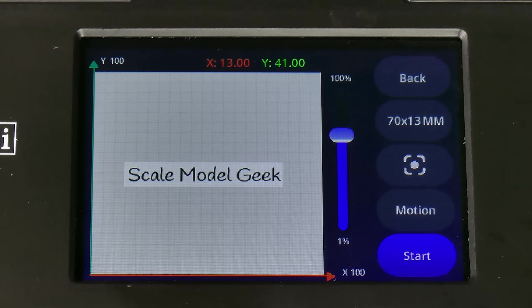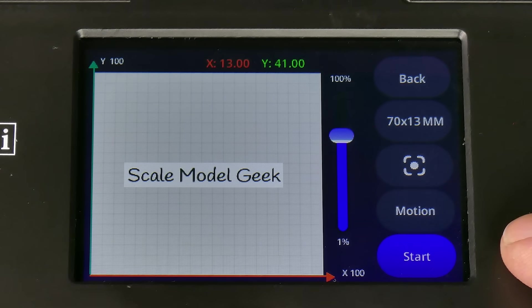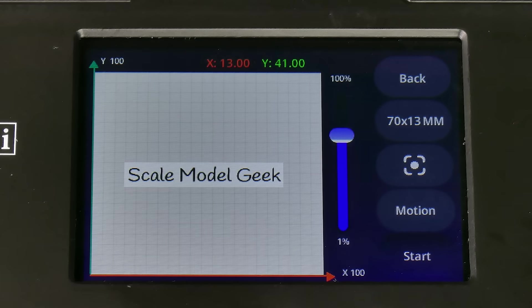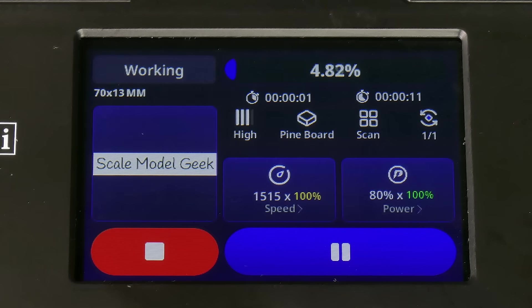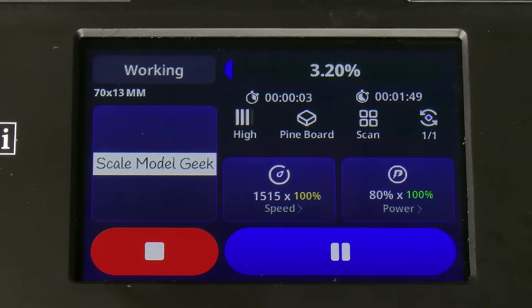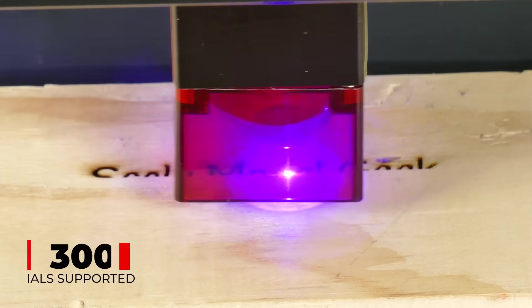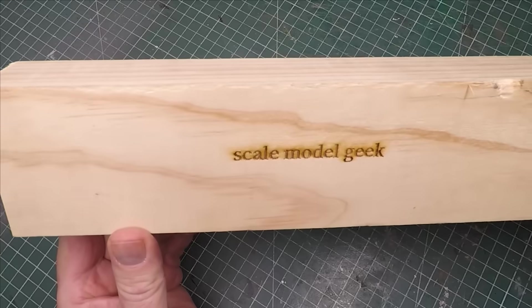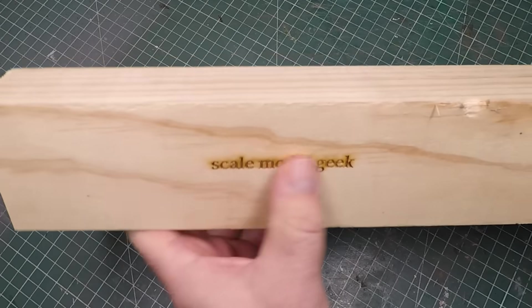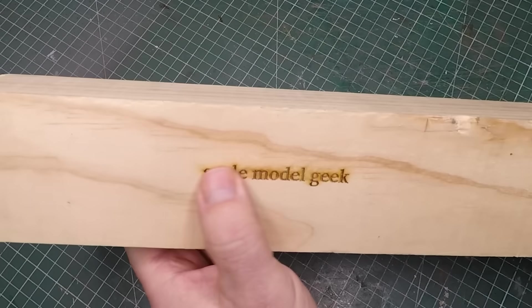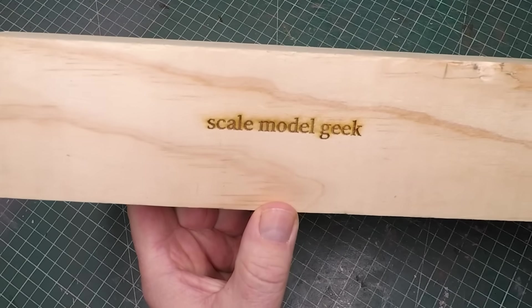We then scroll down, select pine board, and you can see the background's changed to look like it's pine. Again you select the icon that best suits the finished work that you're after. You hit start, it then heads over and calculates it all again like I've said a number of times, and it starts engraving Scale Model Geek onto that pine. In this section I did experiment with the two different types of font and this is the print, and I kind of like it. Doesn't look too bad.